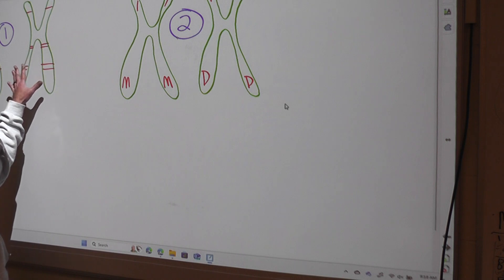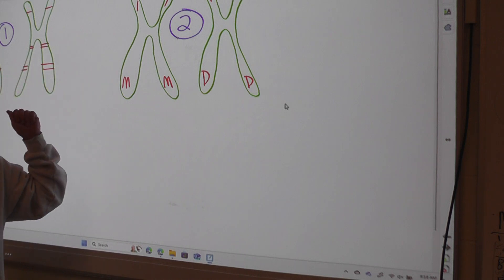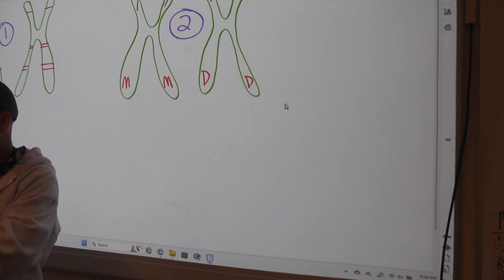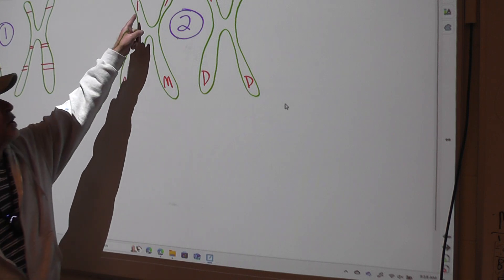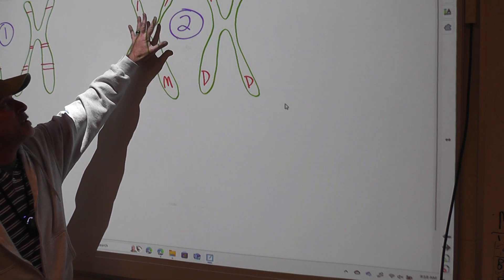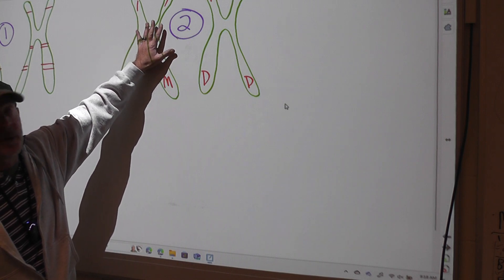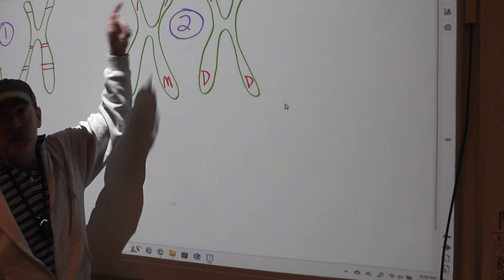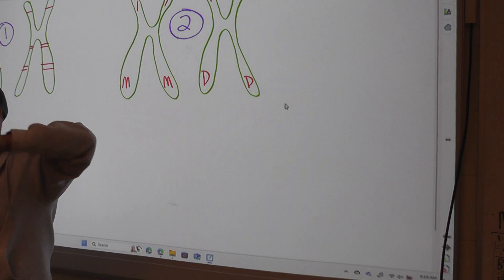So after you've got your chromosomes all lined up in pairs, flip them over. And on the back side, where there's no banding, number them. So you have this chromosome has two sister chromatids. They're both the same information, chromosome number one.